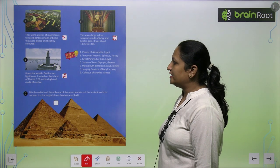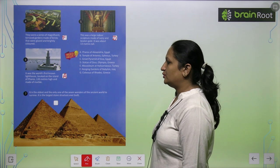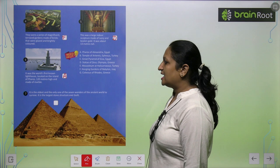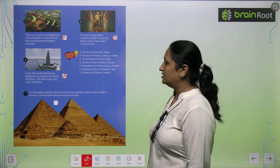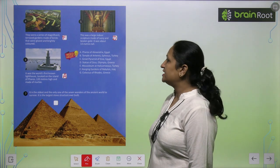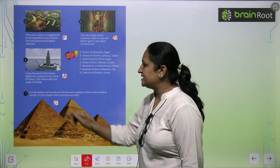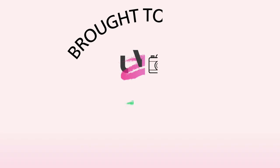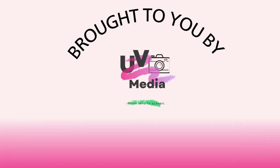It is the oldest and the only one of the Seven Wonders of the Ancient World to survive. It is the largest stone structure ever built. This is the Great Pyramid of Giza, Egypt. You can write here letter C.